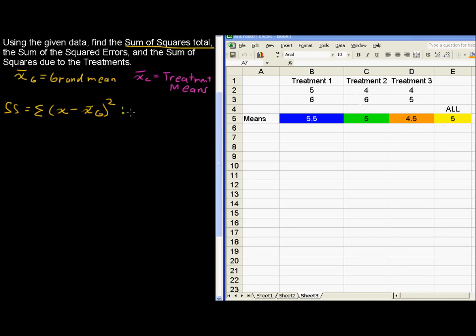Just to show that, running right down the list, 5 minus 5, this 5, minus the grand mean, 5, quantity squared, and then 6 minus 5 quantity squared, and 4 minus 5 quantity squared. You can see why I used very few numbers here. 6 minus 5 quantity squared, 4 minus 5 quantity squared, 5 minus 5 quantity squared.